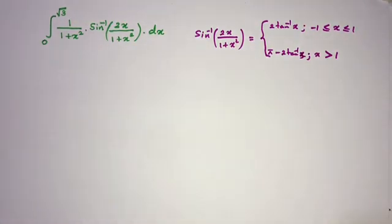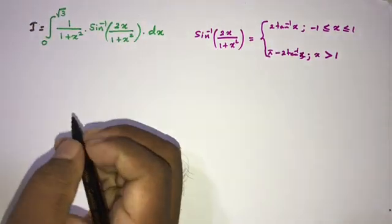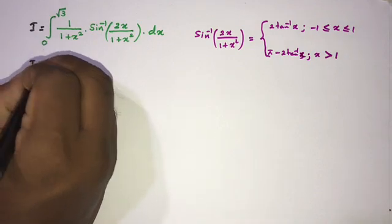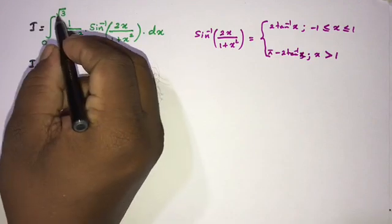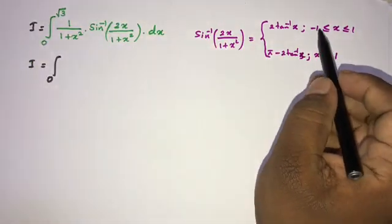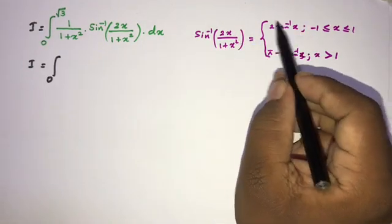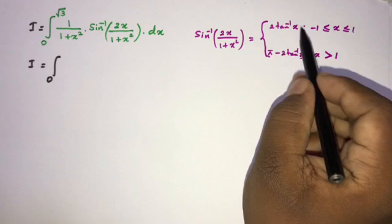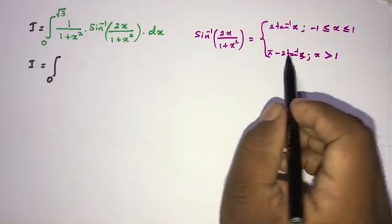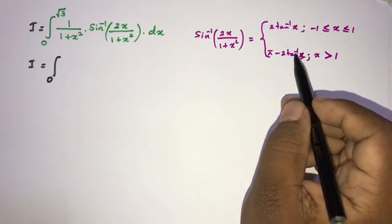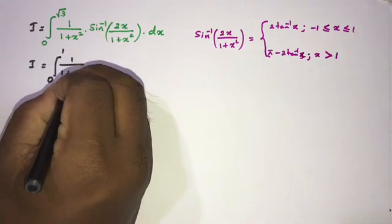Now I will call this integral I. We know that for x between minus 1 and 1, arcsin(2x over 1 plus x squared) equals 2 times inverse tan of x, but when x is greater than 1 this equals pi minus 2 times arctan of x. So we split I into the integral from 0 to 1 plus the integral from 1 to square root of 3.